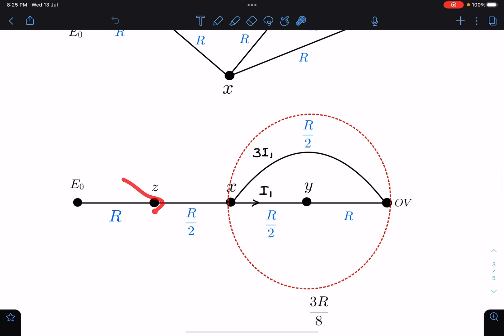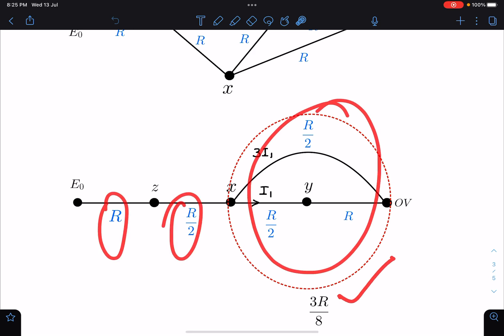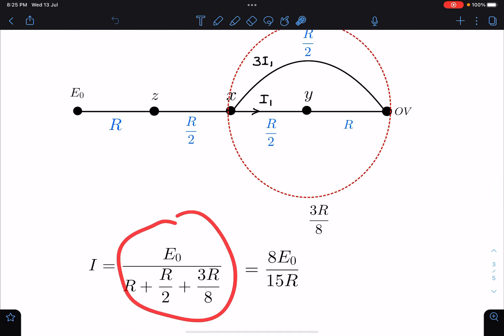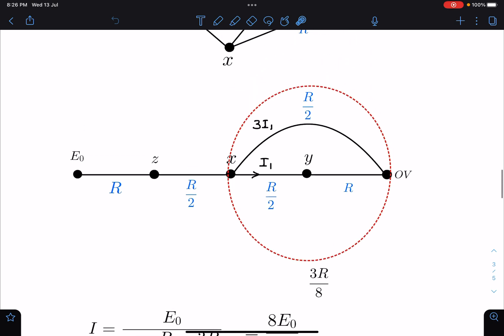Now this circuit is very simple. Let's say a total current of I is coming from here. I can say R, R by 2, and this entire thing is 3R by 8, they are in series. So total current I can write as E naught divided by R plus R by 2 plus 3R by 8, which gives me a current value as 8E naught by 15R.